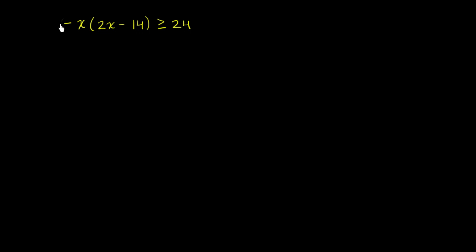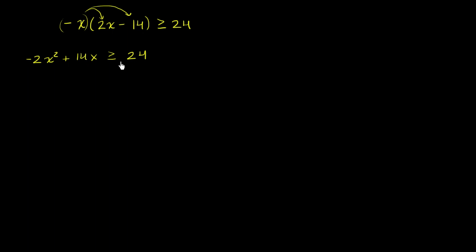On the left-hand side, we can distribute this negative x. If we did that, we would get negative 2x squared — negative times the negative is a positive — plus 14x, is greater than or equal to 24. Now I'm going to subtract 24 from both sides so that we just have a 0 here, and then we can think about factoring. So we have negative 2x squared plus 14x minus 24 is greater than or equal to 0.